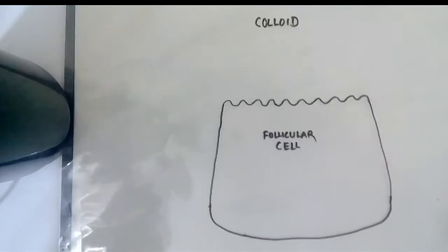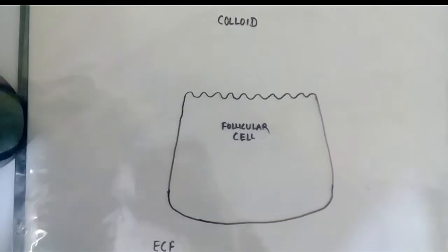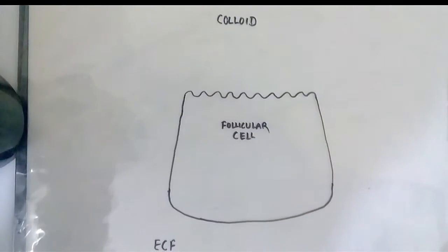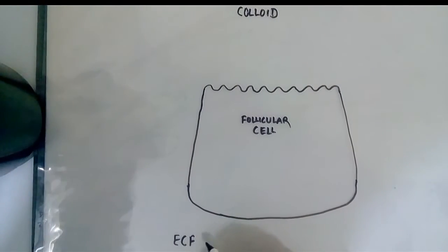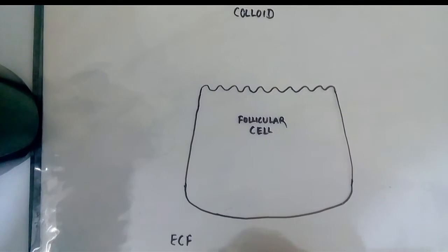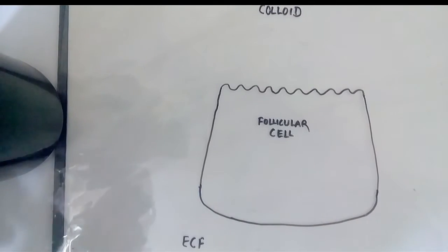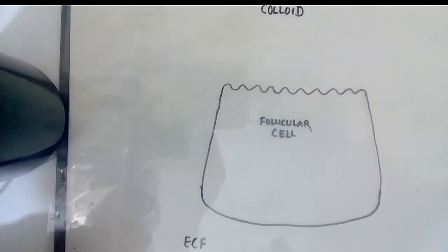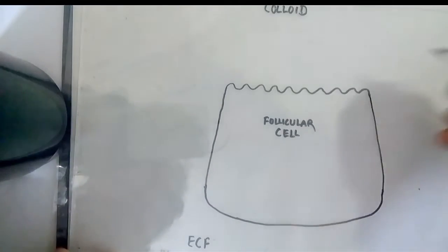I have made a slide so we can save some time. This is the follicle cell. This is extracellular fluid, that is blood, and this is the colloid that I showed in the previous diagram.